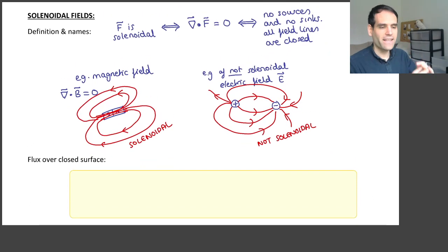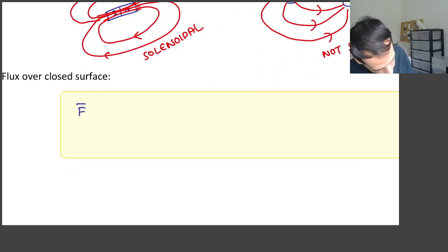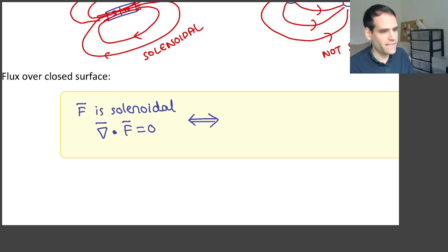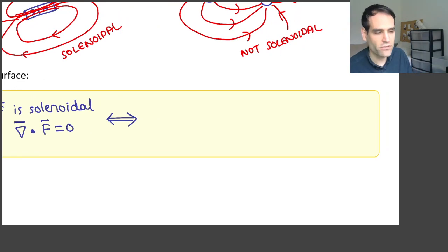Is there any mathematical consequence of a field being solenoidal? Yes, there is. If a field F is solenoidal such that the divergence of F is zero, then this also means that there are no sources and no sinks.